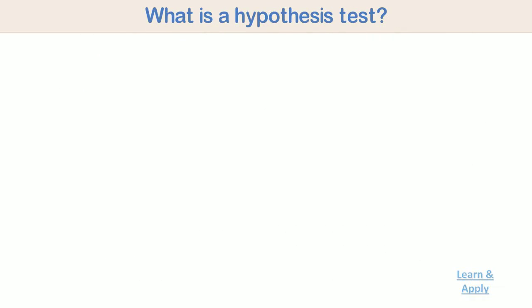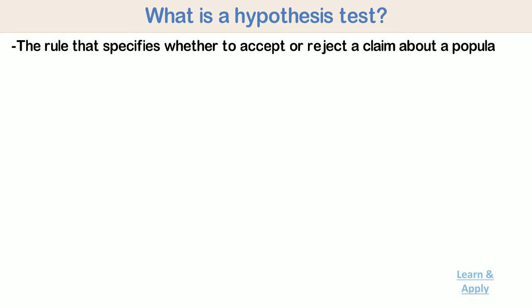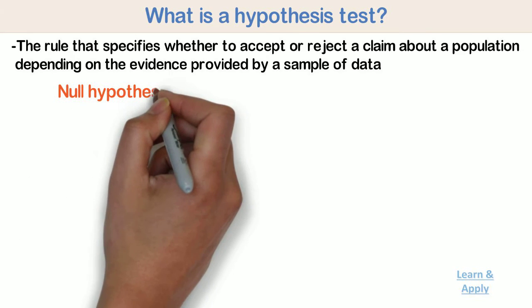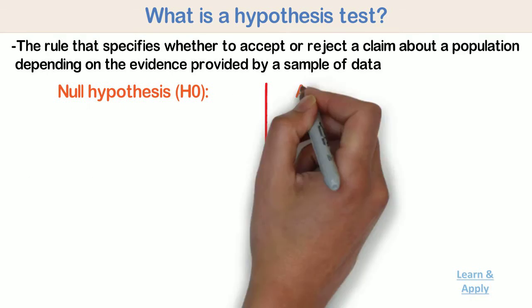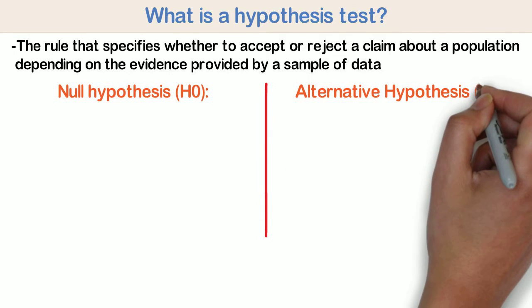What is a hypothesis test? A hypothesis test is a rule that specifies whether to accept or reject a claim about a population depending on the evidence provided by a sample of data. A hypothesis test examines two opposing hypotheses about a population, the null hypothesis and the alternative hypothesis, as seen in the last video.